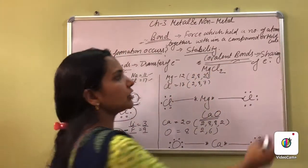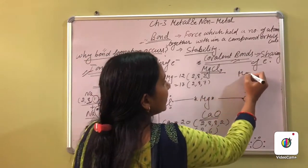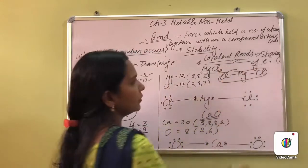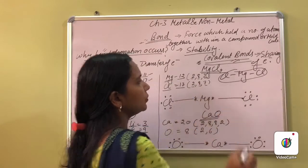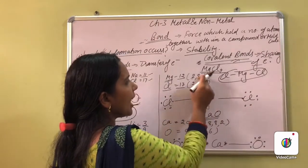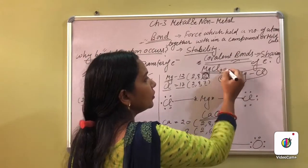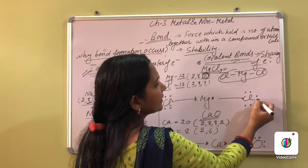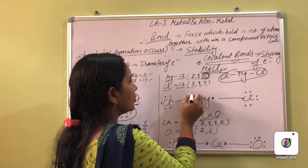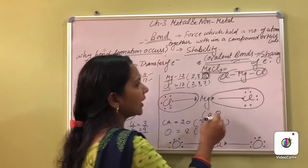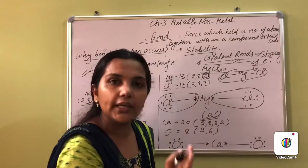Then the next is the covalent bond — bonds formed by sharing of electrons. In the case of magnesium chloride (MgCl₂), the atomic number of magnesium is 12 — electronic configuration 2, 8, 2 — and chlorine is 17 — configuration 2, 8, 7. There are 2 chlorine atoms. Magnesium has 2 electrons in its outermost shell. Each chlorine will share one electron with magnesium. Since only sharing occurs and magnesium does not totally donate its electrons, this bond formed is a covalent bond.